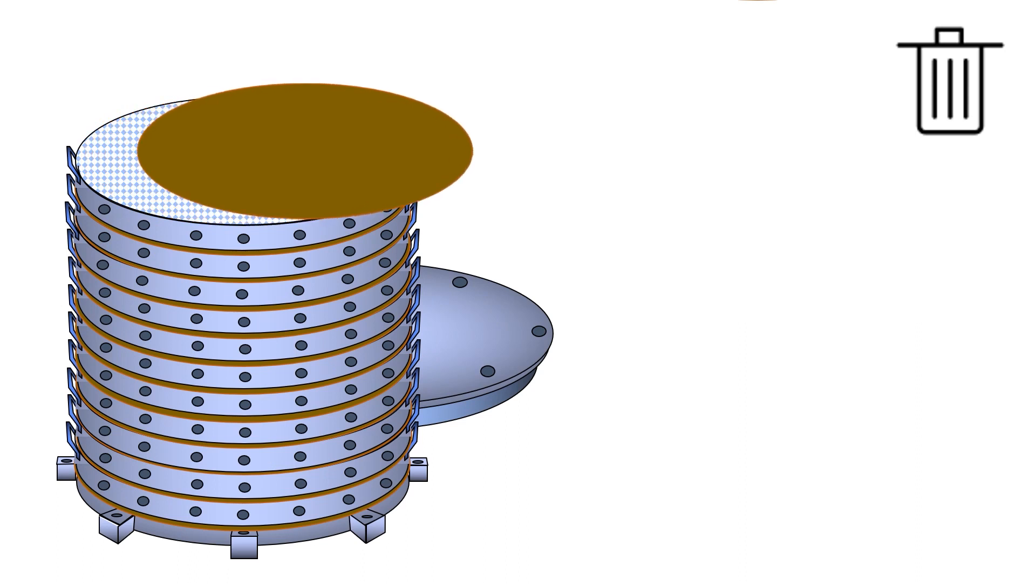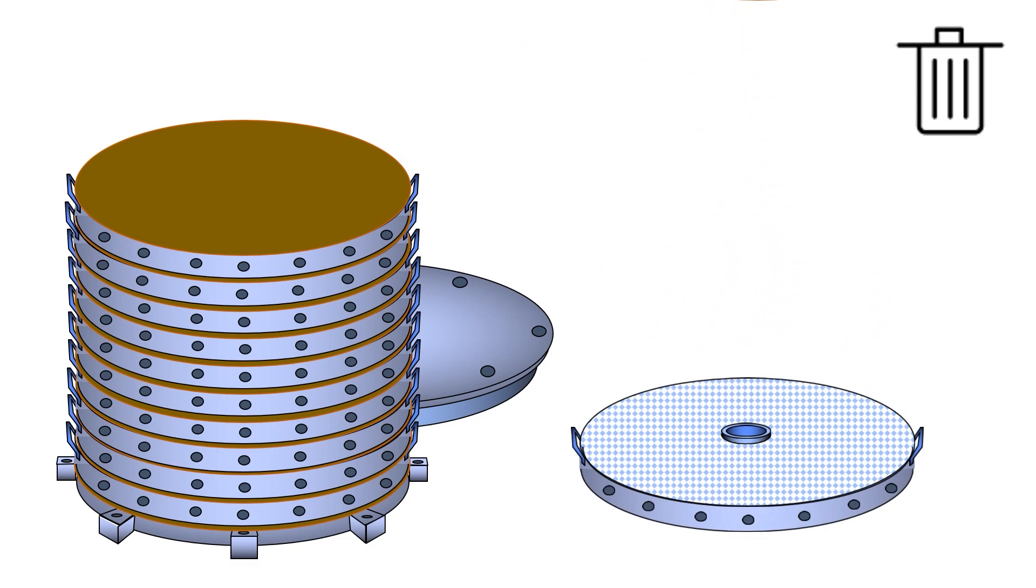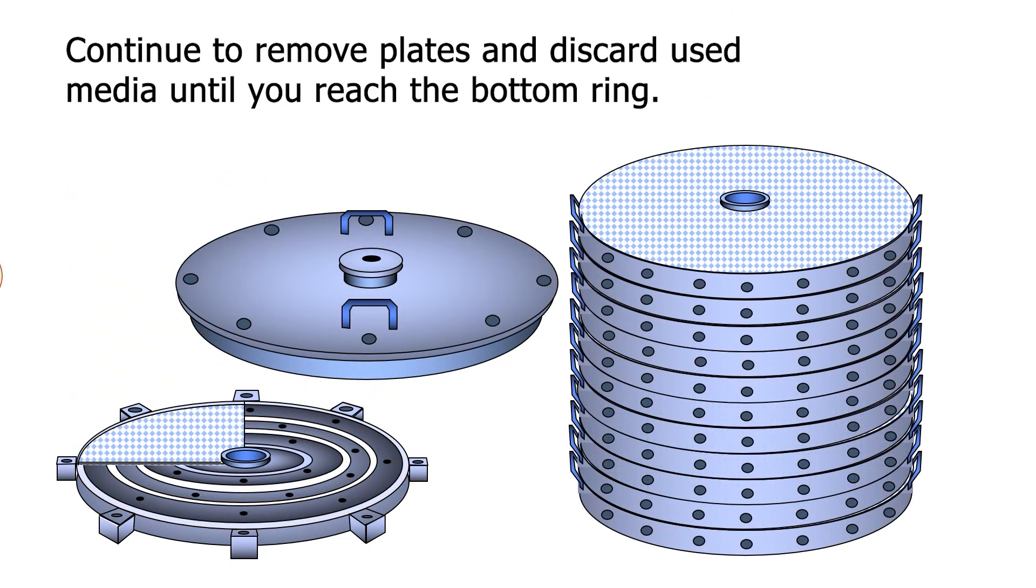Without spare bottom equipment, you will need to discard each used filter media and set the plate to the side. Continue this plate by plate until you reach the bottom ring.